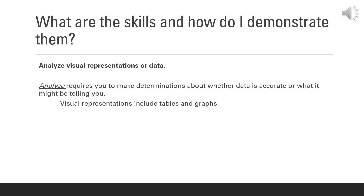The second skill is to analyze visual representations or data. To analyze requires you to make determinations about whether the data or information is accurate or what it might be telling you. You may be given visual representations including tables, graphs, and diagrams, such as a diagram of a biogeochemical cycle.